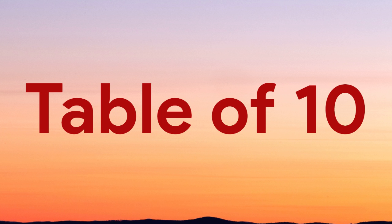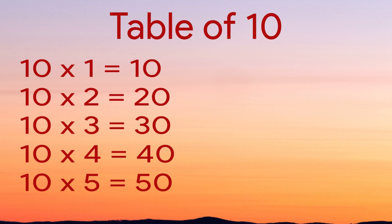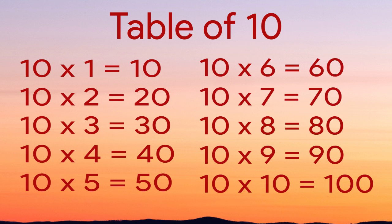Table of 10. 10 times 1 equals 10. 10 times 2 equals 20. 10 times 3 equals 30. 10 times 4 equals 40. 10 times 5 equals 50. 10 times 6 equals 60. 10 times 7 equals 70. 10 times 8 equals 80. 10 times 9 equals 90. 10 times 10 equals 100.